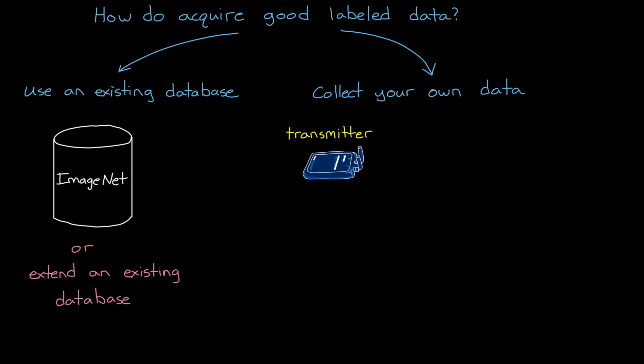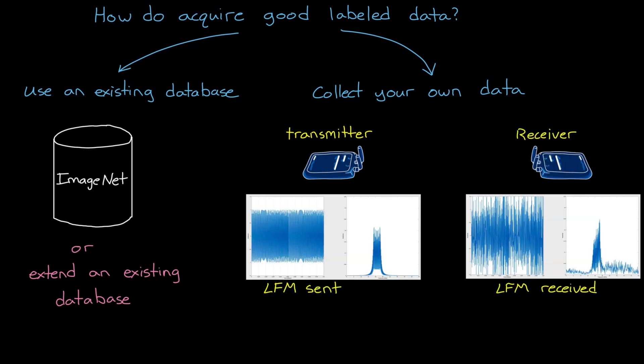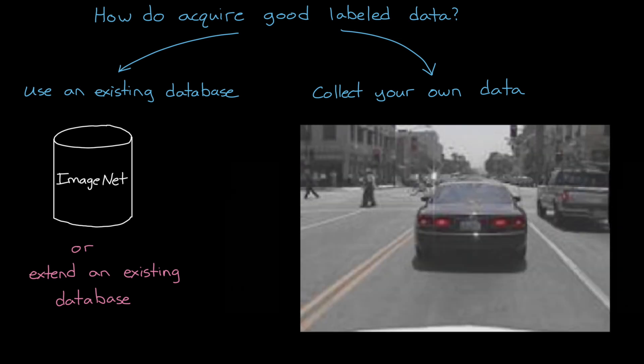This can be done by placing a transmitter and receiver out in the field and sending various waveforms with different parameters while simultaneously adjusting the environment. That's things like noise parameters and other RF sources. You can imagine that this could be fairly difficult and time-consuming to do, especially if you're trying to control for weather or different propagation distances. In some cases, like with autonomous vehicles, the field is still the best way to collect data because there are billions of cars on the road.